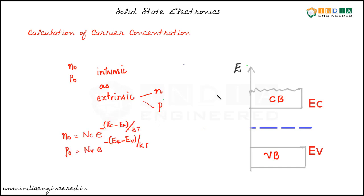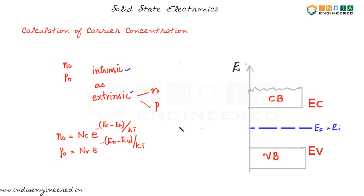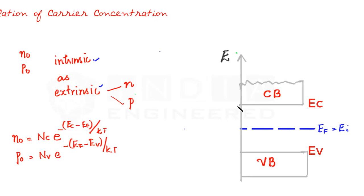The information whether the material is intrinsic or extrinsic is stored in the Fermi level. The Fermi level will act as our reference level. In intrinsic material, we have our Fermi level here — that is our intrinsic Fermi level. This term EC minus EF is the intrinsic EC minus EF, and this is for intrinsic material.